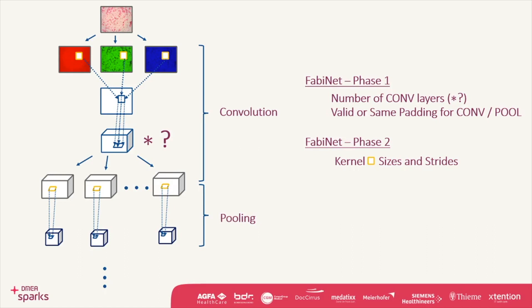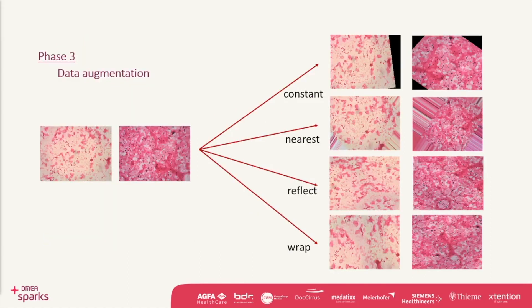For my own network, I first varied the number of consecutive convolutional layers — that is, how much spatial dimension is kept before pooling is applied. In phase two, the possibilities inside the architecture were explored by determining how and at what size the kernels should move over the feature maps. The last phase focused on regularization, by augmenting the training images with rotation, translation, zoom, and shearing transformations, applied in four modes.